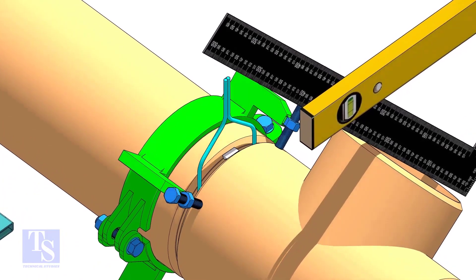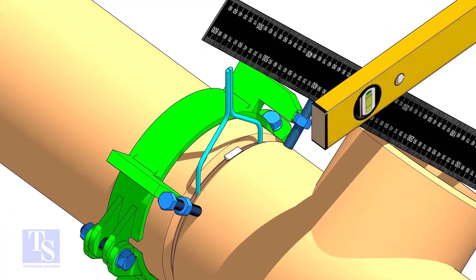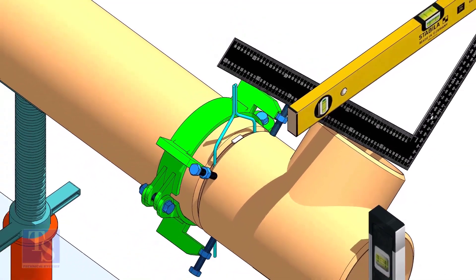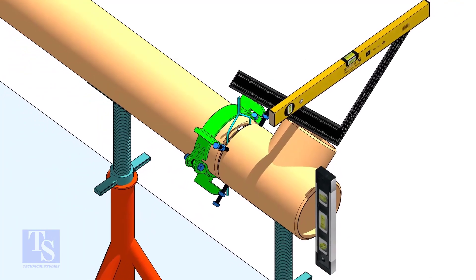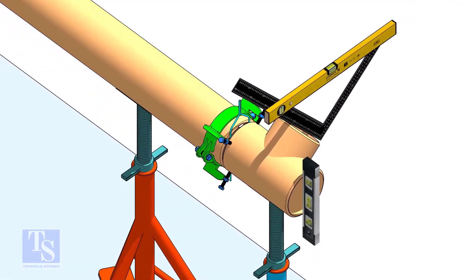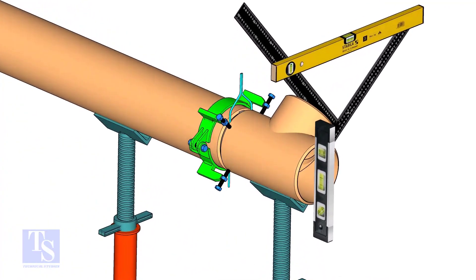Tack weld on the top side of the joint. Check the end level of the T. Tack weld at the bottom side.